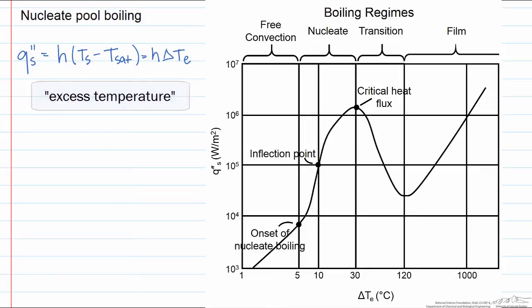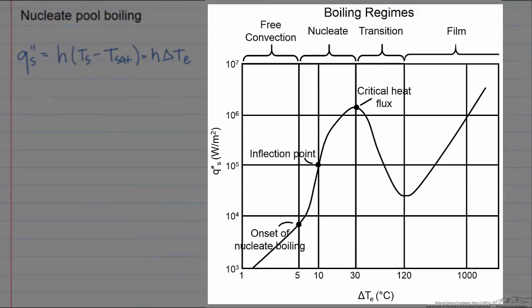There are different regimes of what we call pool boiling, where liquid is quiescent and the surface motion is due to free convection as well as mixing due to bubble formation. Nukayama created a boiling curve for saturated water at atmospheric pressure to demonstrate the different regimes of pool boiling. This shows the heat flux with respect to delta T sub E, and it's that difference in temperature that determines what regime we're in.